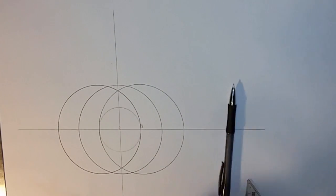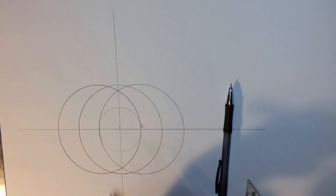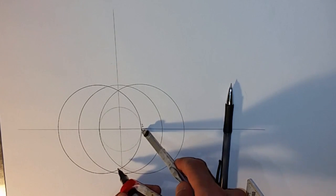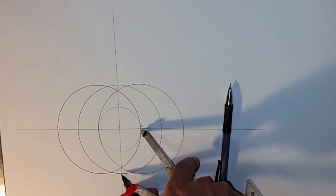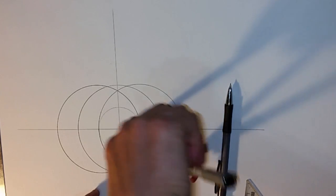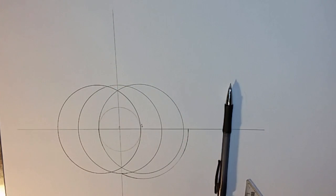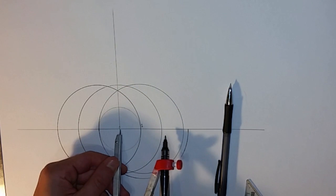Now we have our zero point and we're going to define this as one. Now we find the square root of five. Put our point on one, open it up, and that will give us a square root of five.